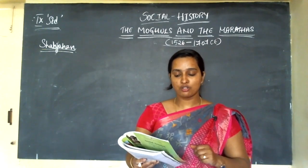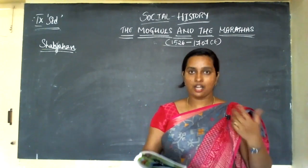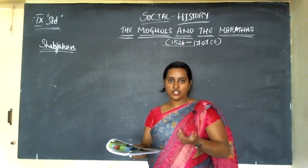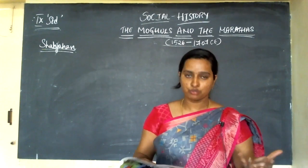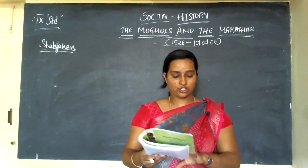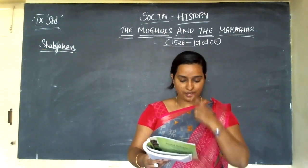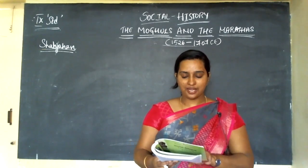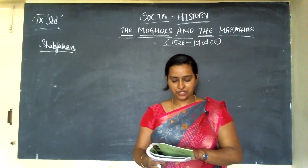Shah Jahan was defeated while trying to annex the Balkh region in Central Asia. Shah Jahan followed a method of evaluating land taxes based on its fertility — similar to what Sher Shah used to do. The Taj Mahal, Red Fort of Delhi, and other Mughal architecture were built during his reign, and this period is called the Golden Period.